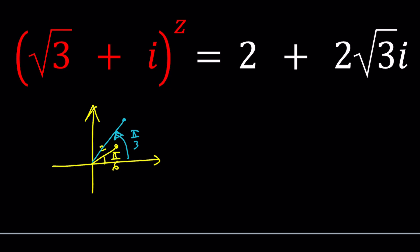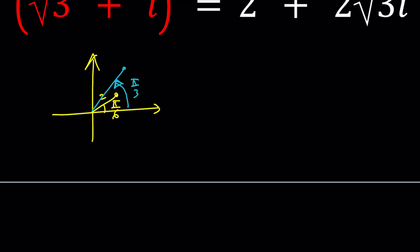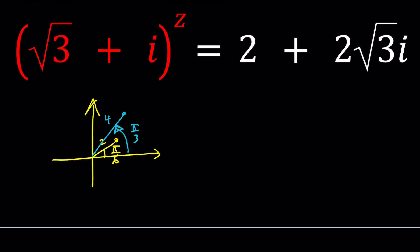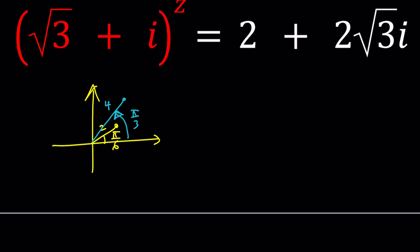So the first one, the modulus is 2. Oh, by the way, I forgot to say the modulus here is 4. Now, square root of 3 plus i, we can write it as 2 times e to the power i pi over 6, right?